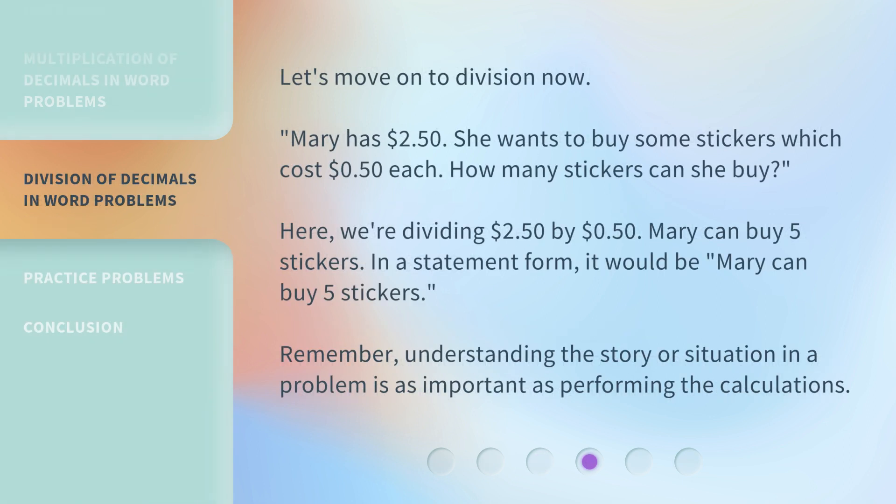Let's move on to division now. Mary has two dollars and 50 cents. She wants to buy some stickers which cost 50 cents each. How many stickers can she buy? Here, we're dividing two dollars and 50 cents by 50 cents. Mary can buy five stickers. In statement form, it would be: 'Mary can buy five stickers.' Remember, understanding the story or situation in a problem is as important as performing the calculations.